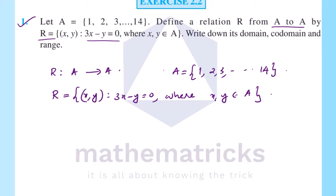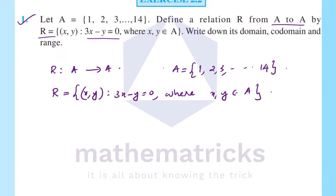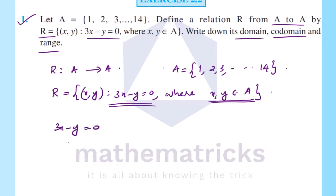Here we have a question about the relation — its domain, co-domain and range. The relation is defined as the set of all (x, y) such that 3x minus y equals 0, where (x, y) belongs to A. Now, 3x minus y equal to 0 means y is equal to 3x.